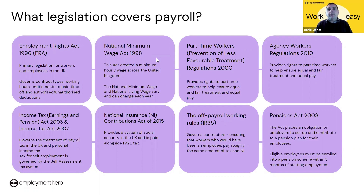Off-payroll working rules — IR35 — used to be very exclusive to the public sector but was then extended into the private sector. This defines whether a worker is an employee or a contractor, and you need to go through an assessment of all contractors to determine whether they're off-payroll under IR35. If they are deemed to be an on-payroll contractor, then you need to work out the right tax and national insurance and pay them through the payroll as such.